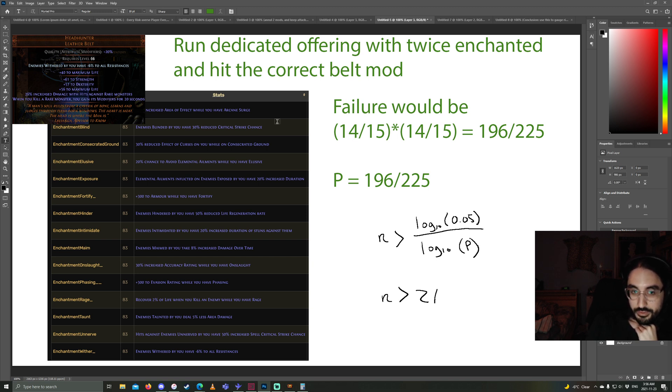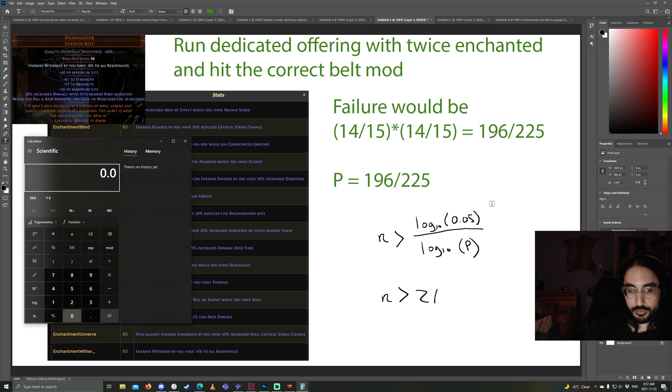So failure would be, there's 15 outcomes. They're all equal weighting. So, your first blessing that you use, there's a 14 out of 15 chance that it doesn't hit the one you want. And if that fails, then there's a 14 out of 15 chance that your second one fails. So failure happens when both of them fail. So we multiply them together. That's how we calculate our failure rate. So, P is 196 divided by 225. Let's plug that in. 0.05 log divided by bracket 196 out of 225 log. So 21.7. Round that up to 22.